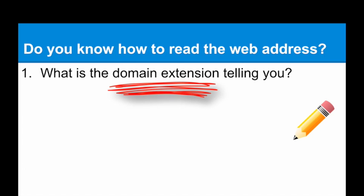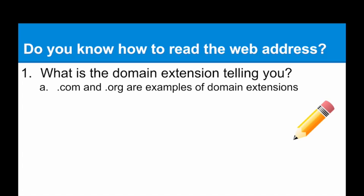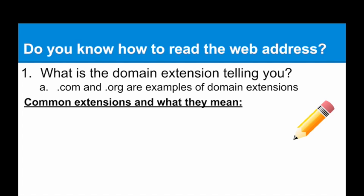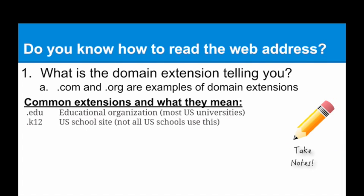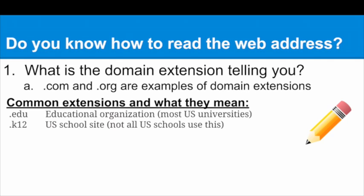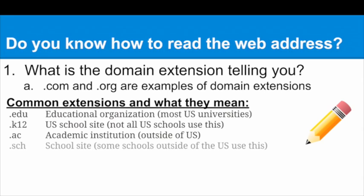After you look at the domain name, there's another thing called the domain extension, and you need to think about what that's actually telling you. .com and .org are easy examples. There are a lot of common extensions: .edu means it's an educational organization — most US universities use this. .k12 usually means it's a US school site. .ac means an academic institution mostly used outside of the United States. .ch is also a school site used outside of the US.